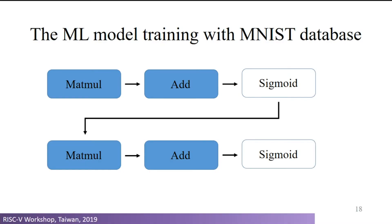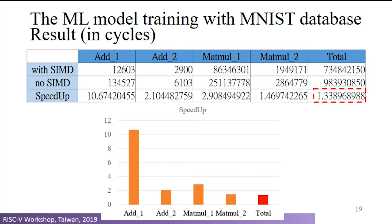The first model we use is a handwriting recognition model trained with the MNIST database. It is a simplified model containing only six nodes. The blue nodes indicate that a SIMD instruction is used in that operator. From this model, comparing with SIMD versus without SIMD, we can achieve a 1.33x speedup.